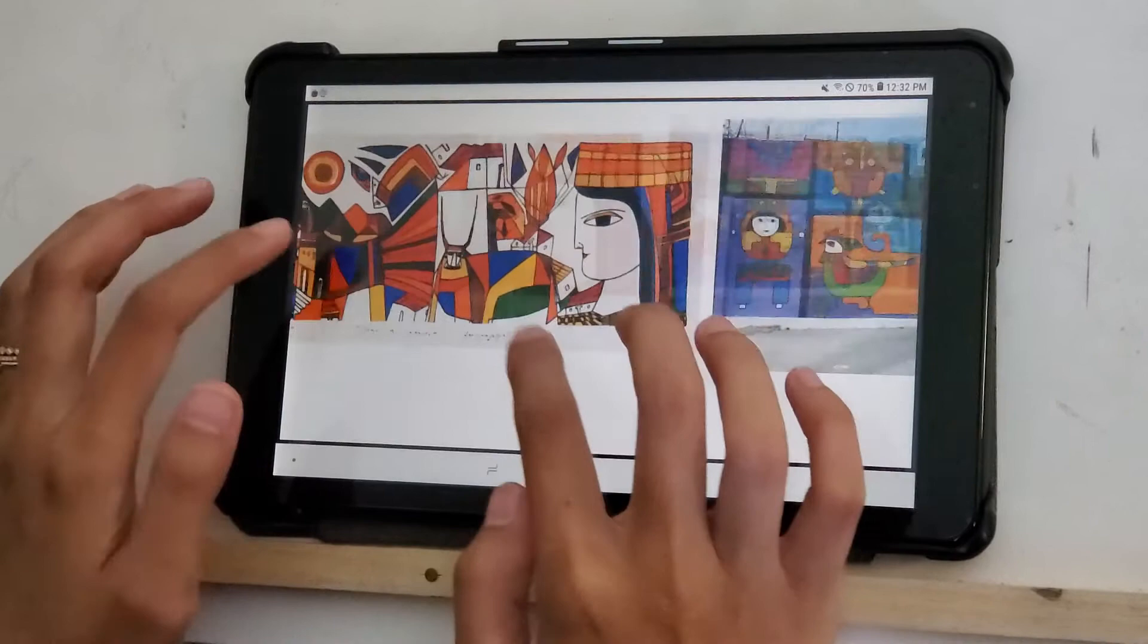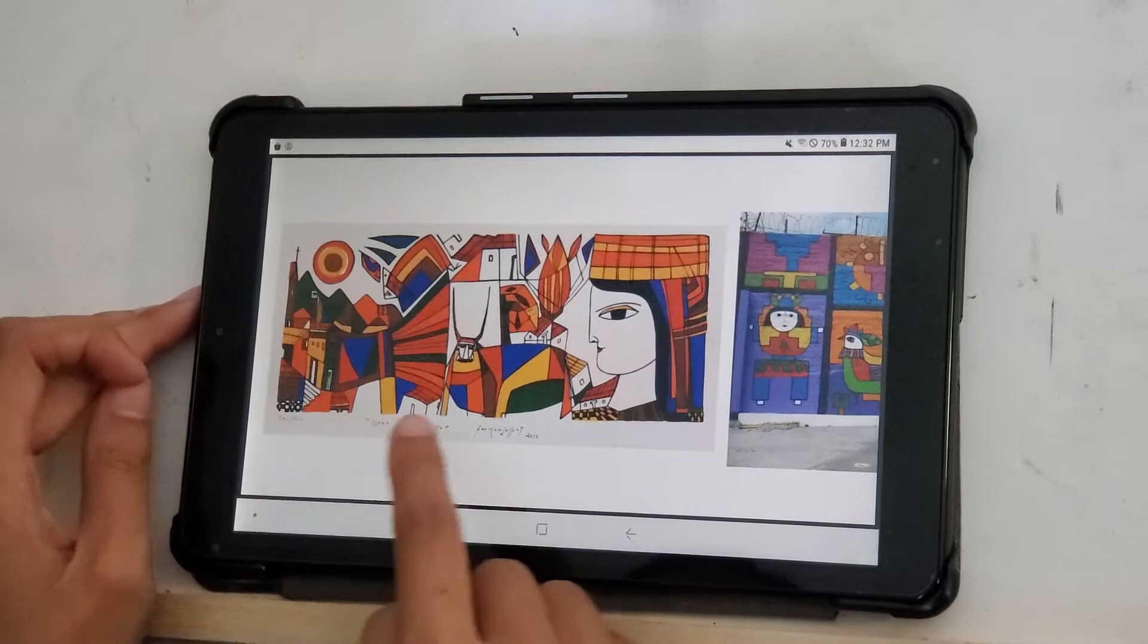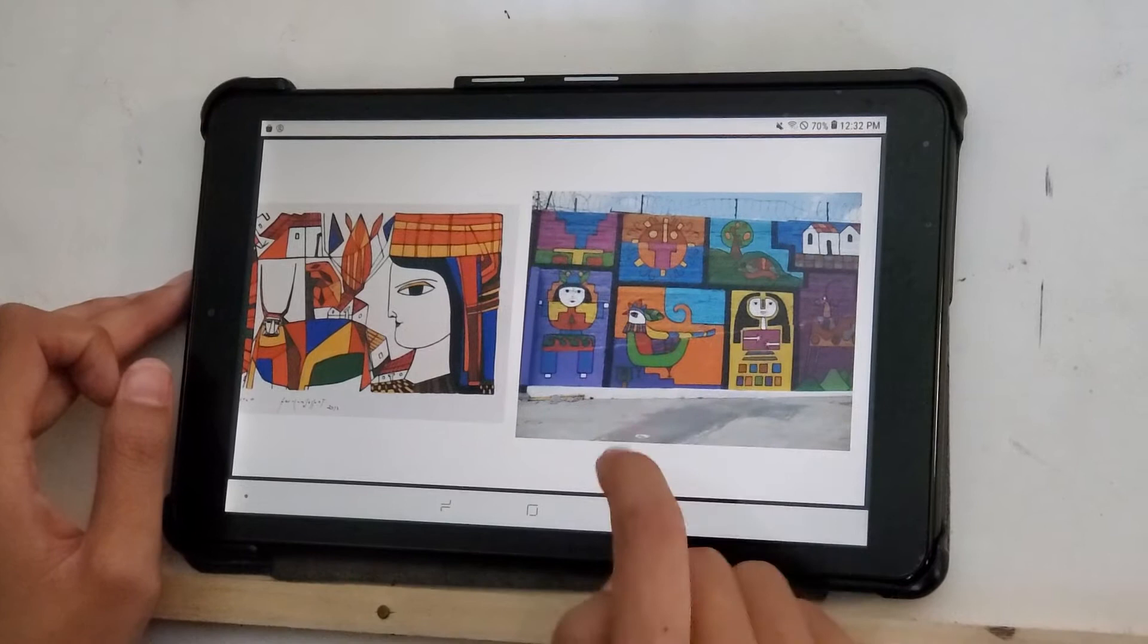And here is just another slide with some more of his artwork. Again, you can see some buildings that you might find in El Salvador, some different kinds of animals and imagery. He even did a mural. A mural is just a really large painting on the side of a wall.